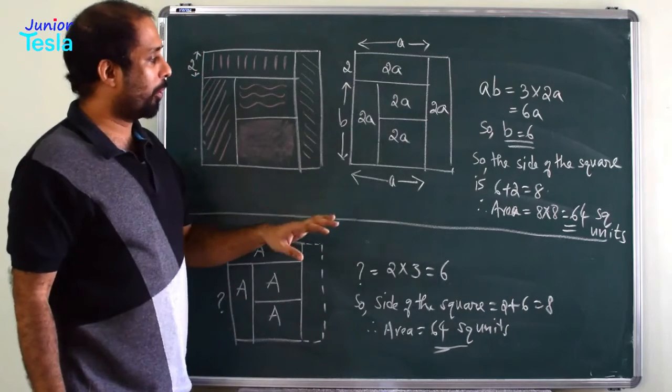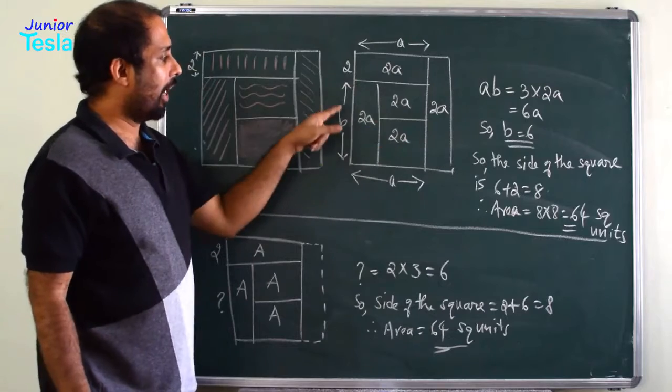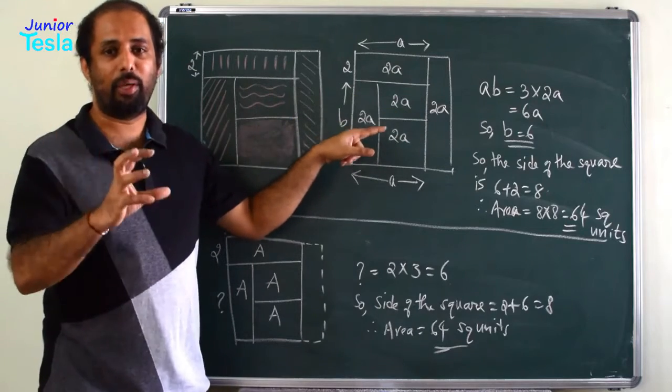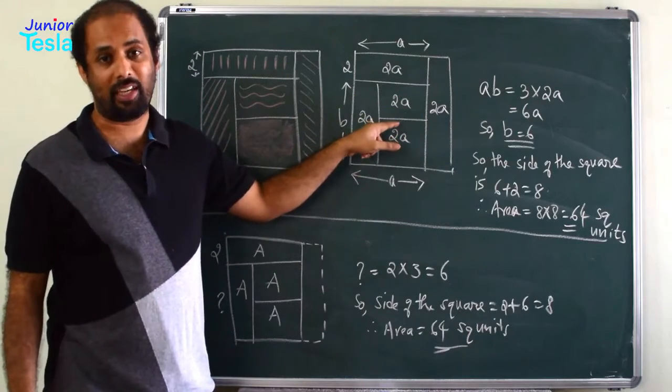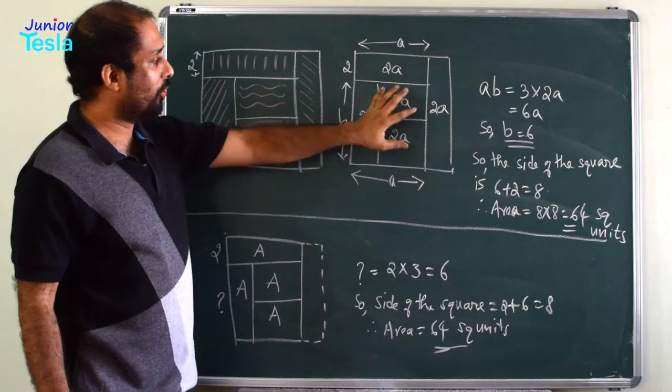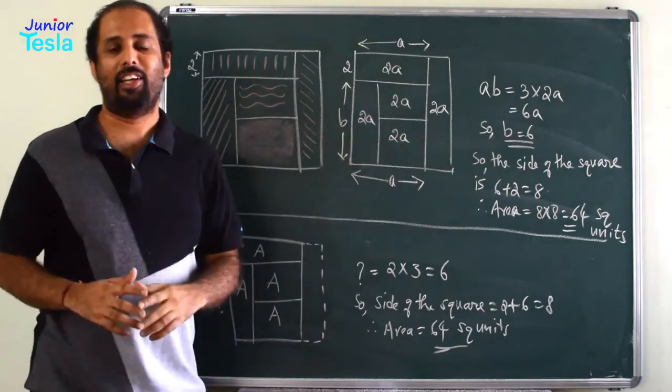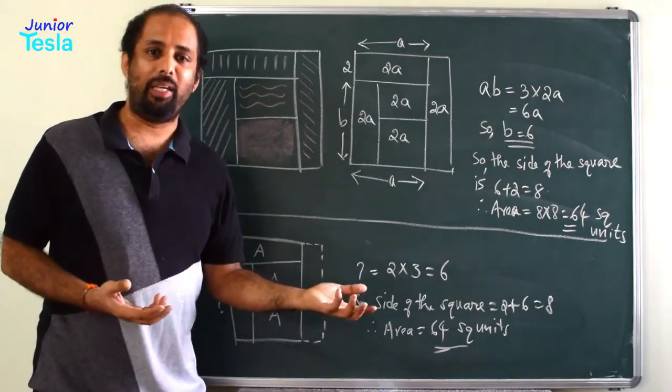But if you see the diagram properly, this region is having three parts, right, 2A plus 2A plus 2A, which is equal to 6A. So, A into B is equal to 6A or B is equal to 6. So, you got the value of B.